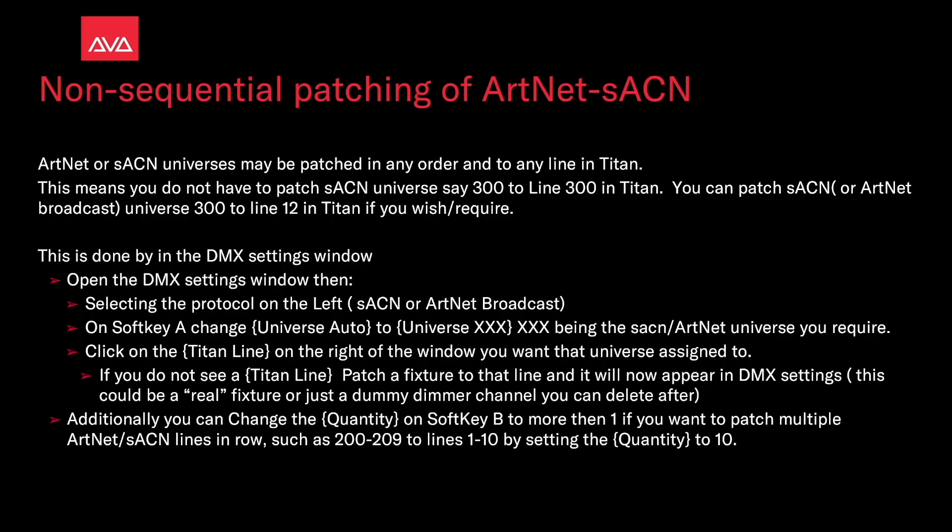Additionally, you can change the quantity on Soft Key B to more than one if you want to patch multiple Streaming ACN or ArtNet lines in a row — such as universes 200 through 209 to lines 1 through 10 by setting the quantity to 10.